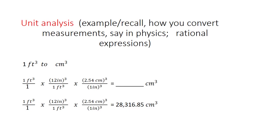We continue by converting cubic inches to cubic centimeters. There are 2.54 centimeters in one inch, so we express the conversion factor in terms of cube. There will be cancellation — cubic feet to cubic feet, cubic inches to cubic inches — and the remaining unit is cubic centimeters. The answer is 28,316.85 cubic centimeters. We solved the problem through unit analysis alone.